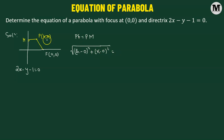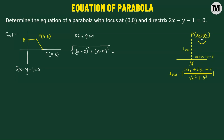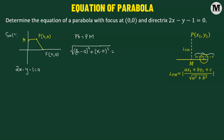PM is the perpendicular distance of point P from the directrix line. There's a particular formula for this. Suppose we have a point P with coordinates (x₁, y₁) and a straight line ax plus by plus c equals 0. The perpendicular distance PM equals the absolute value of ax₁ plus by₁ plus c, divided by the square root of a squared plus b squared, where a and b are the coefficients of x and y in the straight line.